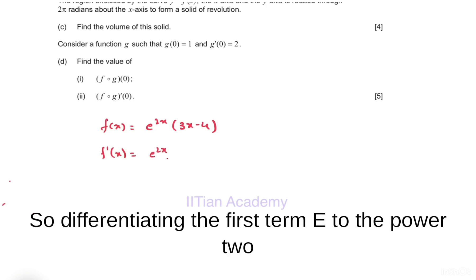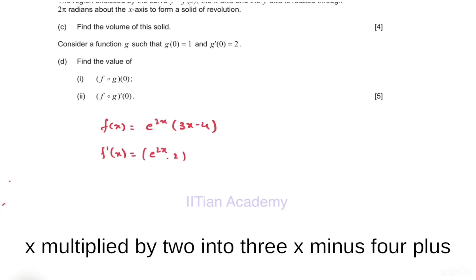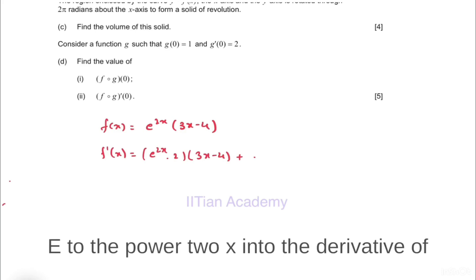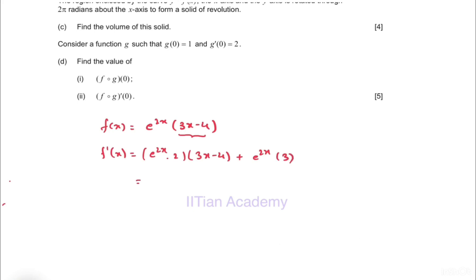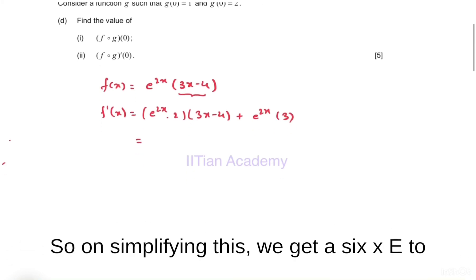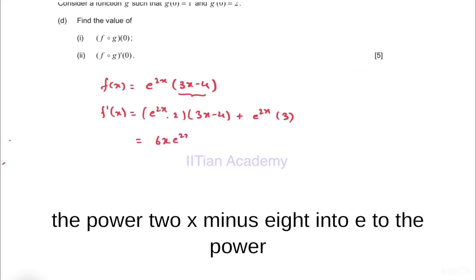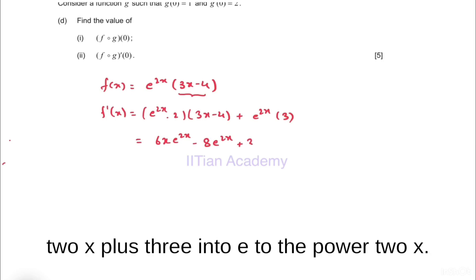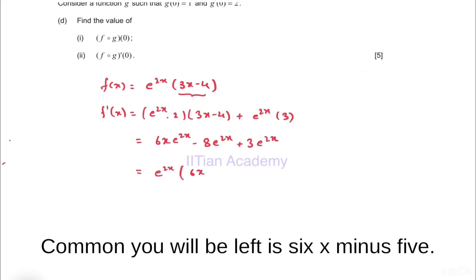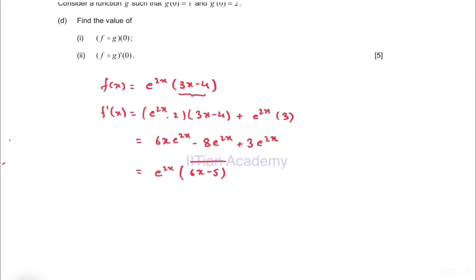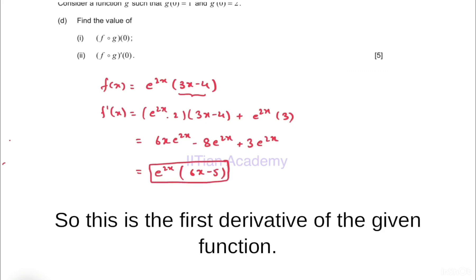Differentiating: the first term e^(2x) multiplied by 2 into (3x - 4), plus e^(2x) into the derivative of the second term which is 3. On simplifying we get 6x·e^(2x) minus 8·e^(2x) plus 3·e^(2x). Taking e^(2x) common, we are left with (6x - 5). So f'(x) = e^(2x)(6x - 5). This is the first derivative of the given function.